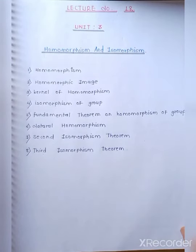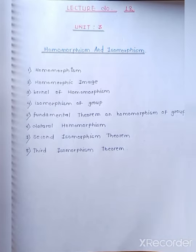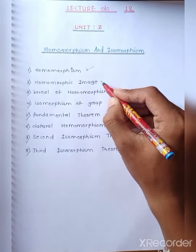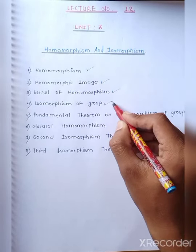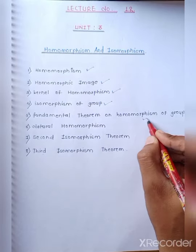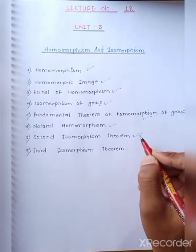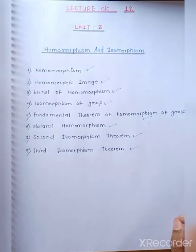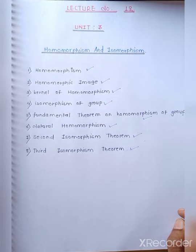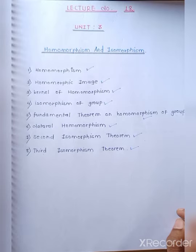Good morning. In the previous lecture we completed Unit Number Two of Modern Algebra. This is Lecture Number 12. In this lecture we will start Unit Number Three, whose name is Homomorphism and Isomorphism. In this unit we will study homomorphism, homomorphic image, kernel of homomorphism, isomorphism of a group, fundamental theorem on homomorphism of a group, natural homomorphism, second isomorphism theorem, and third isomorphism theorem.